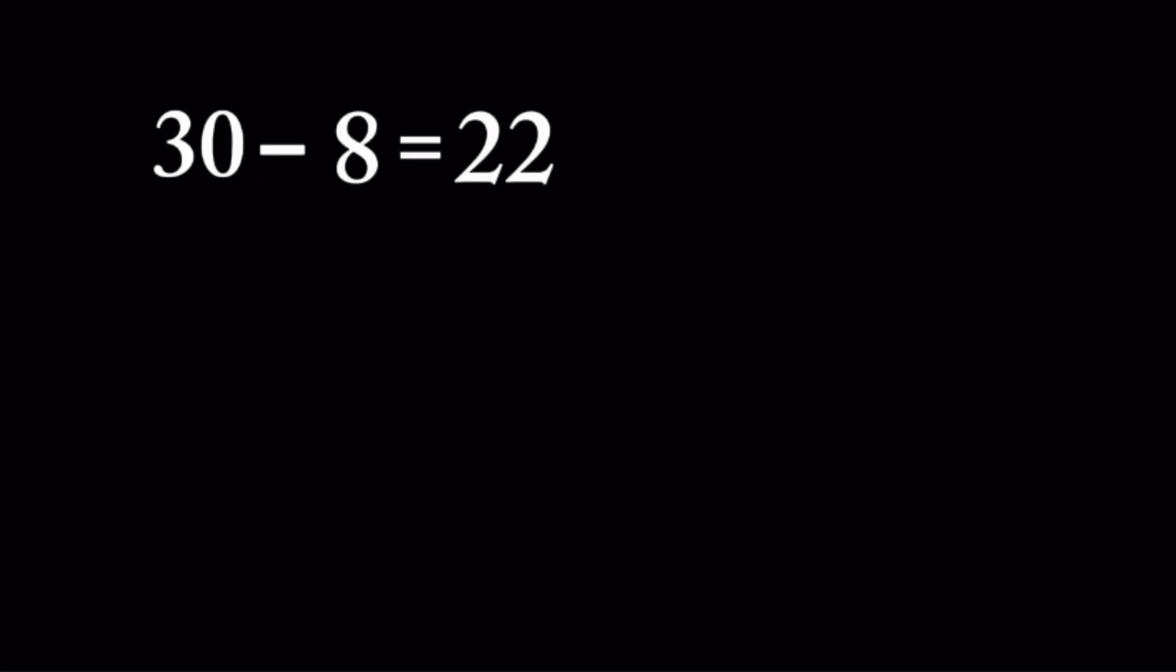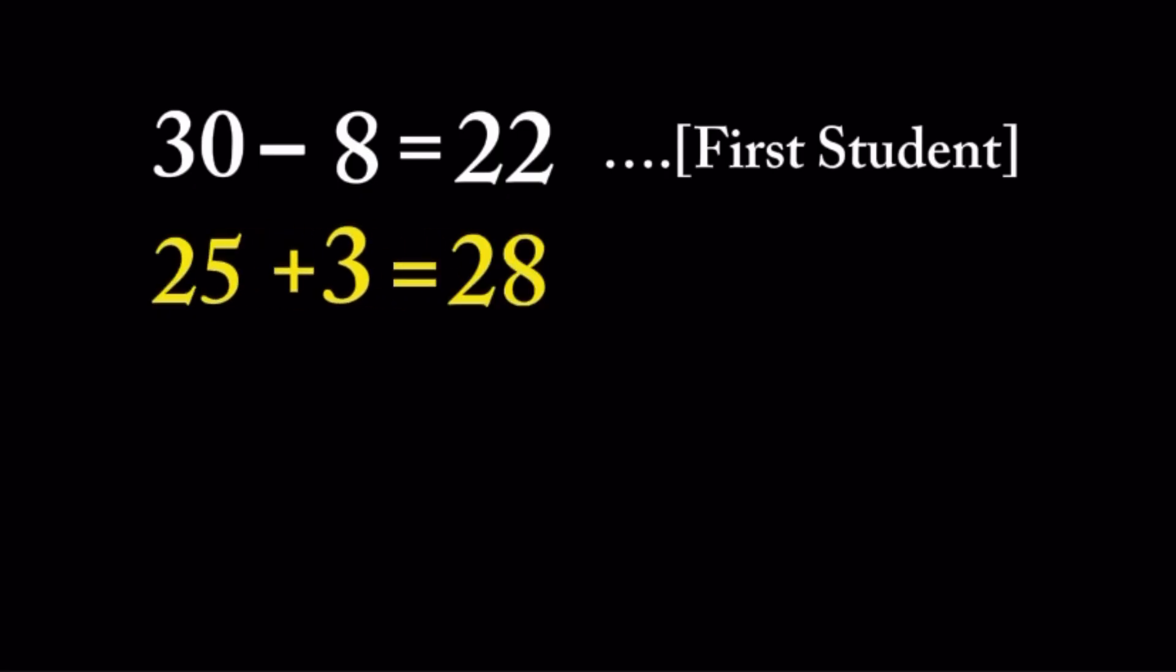The second student solved 30 - 5 + 3 as 30 - 5 = 25, then 25 + 3, which gave him 28.